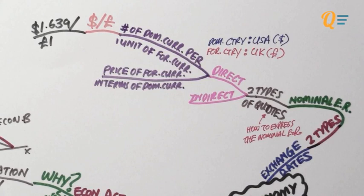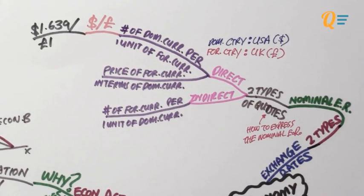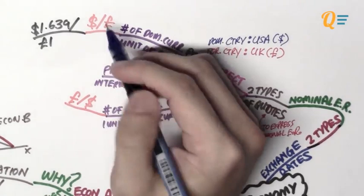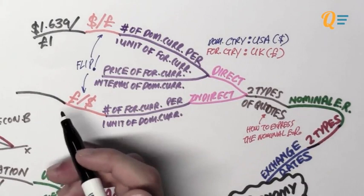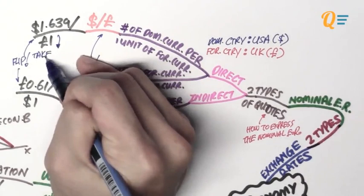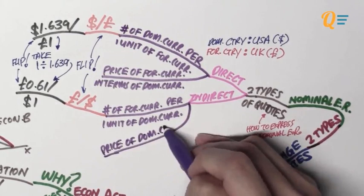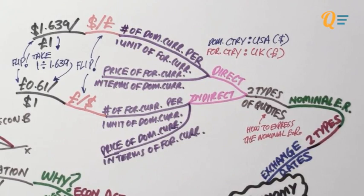Now let's move on to the indirect quote. The indirect quote is the amount of foreign currency per one unit of domestic currency. After you understand the direct quote, it is very simple to find the indirect quote — you just flip the figure around. So instead of dollar divided by pound, you've got pound divided by dollar. To find it, take one pound divided by 1.639 dollars, and that gives the indirect quote of 0.61 pounds per one US dollar. So the indirect quote is actually the price of the domestic currency in terms of a foreign currency — if I go to the money changer, I give 0.61 pounds for one US dollar.